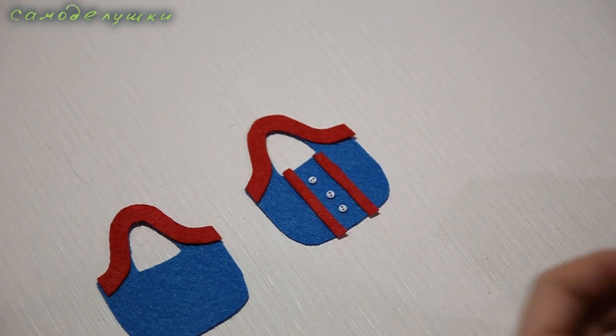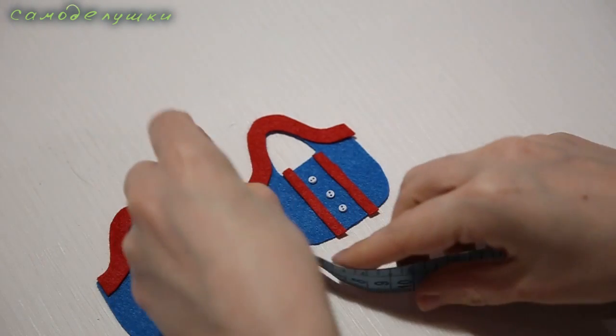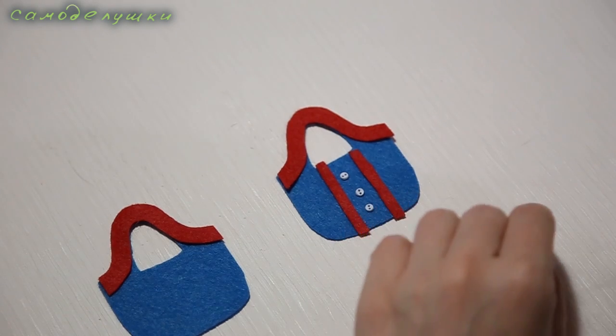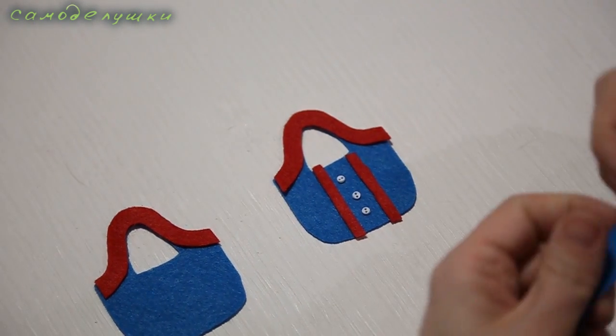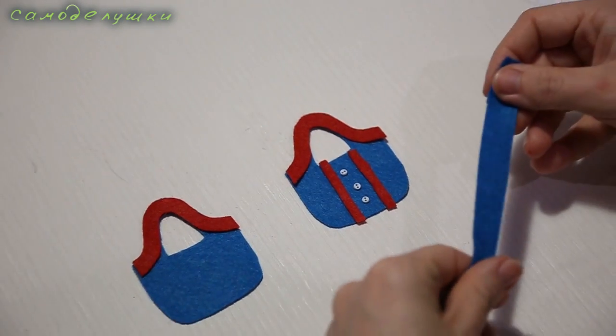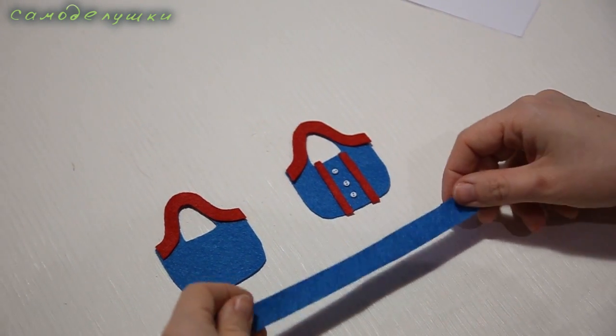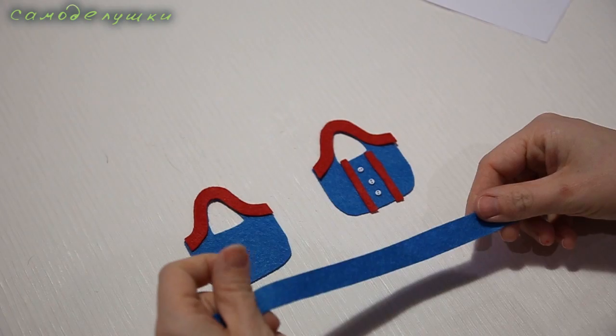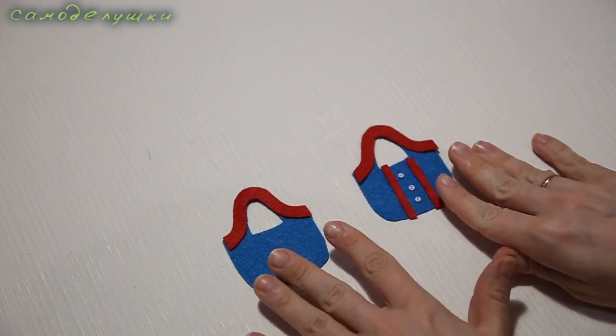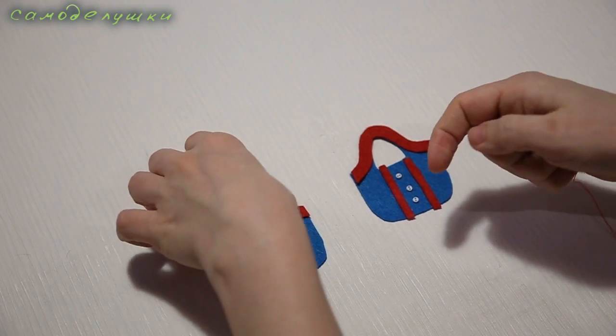Now I'll measure the resulting bag with the measuring tape. I get 13 centimeters. I'll cut a strip from felt about one and a half centimeters wide and 13 centimeters long. So all the pieces are cut. Now it remains to sew the bag. First I'll sew all the elements laid out here to the main pieces.